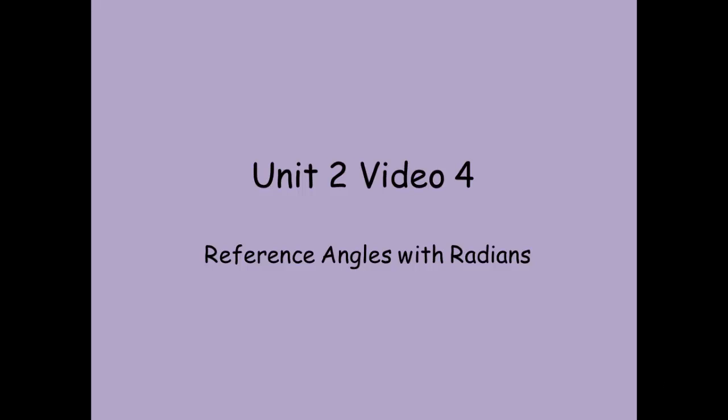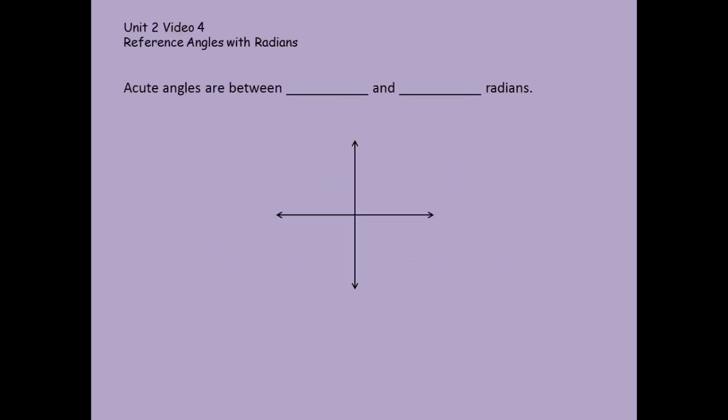Welcome to Unit 2, Video 4. We're going to talk here about reference angles with radians. If you've already watched the reference angles with degrees, we are looking for angles that are less than 90 degrees. Let's go ahead and review. So here in radians, our angles are between 0 and π over 2. That's going to put us somewhere in this range because 90 degrees is π over 2.